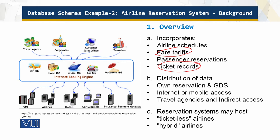The GDS is the Global Distribution System. In early days, airlines had their own reservation systems, but that changed and was deregulated. Now there are a number of companies running global distribution systems, and different airlines tap into it — users tap into it, airlines tap into it.